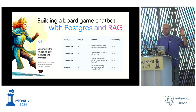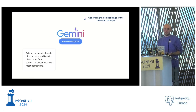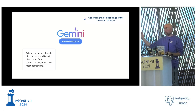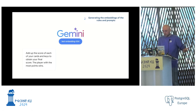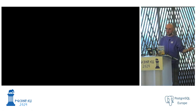Now we have a table with the games, each game has rules split into chunks. The next step is generating embeddings. I take the content of each rule, send it to the embedding API, and the API returns a vector. That's as simple as it is.